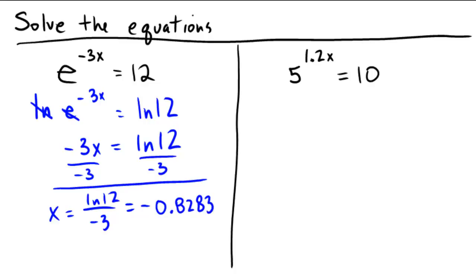Okay, how about this problem on the right then? Here we could take a log base 5, but here I'm just going to actually pull out the ln again. Love the ln. ln of 5 to the 1.2x equals ln of 10.